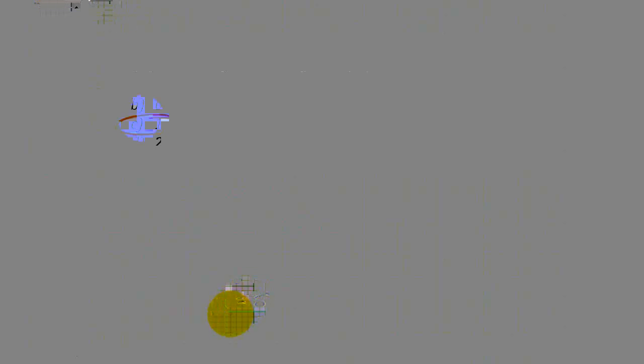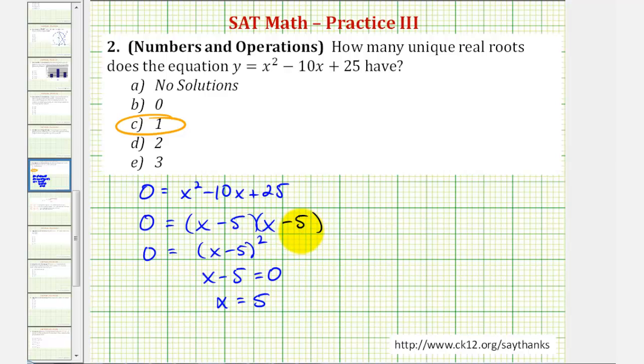Now I should mention too that in algebra, because we have two factors of x minus five, even though we do only have one unique real root, we often say that this root has multiplicity two because there are two factors of x minus five.